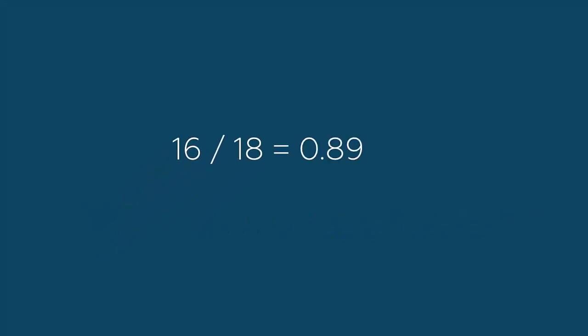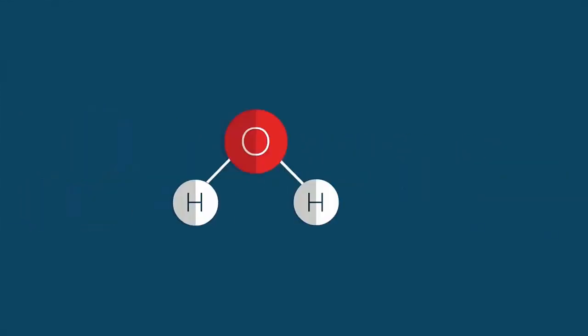Finally, we multiply the quotient of 0.89 by 100. And there we go, the percentage mass of oxygen in water: 89%.